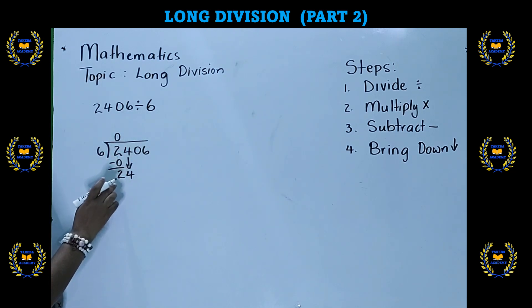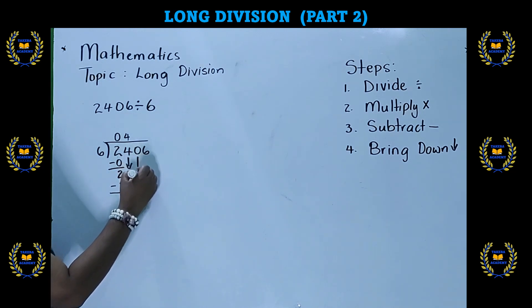We go back to our first step. 24 divided by 6, that's 4. 6 times 4, second step, is 24. Third step, we subtract. 24 take away 24, that's 0. I'm doing it column by column so that you understand what I did. Alright, the next step is to bring down.